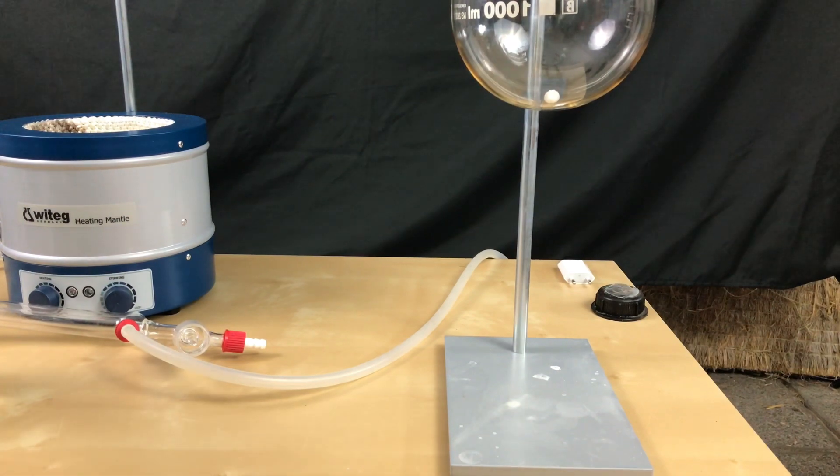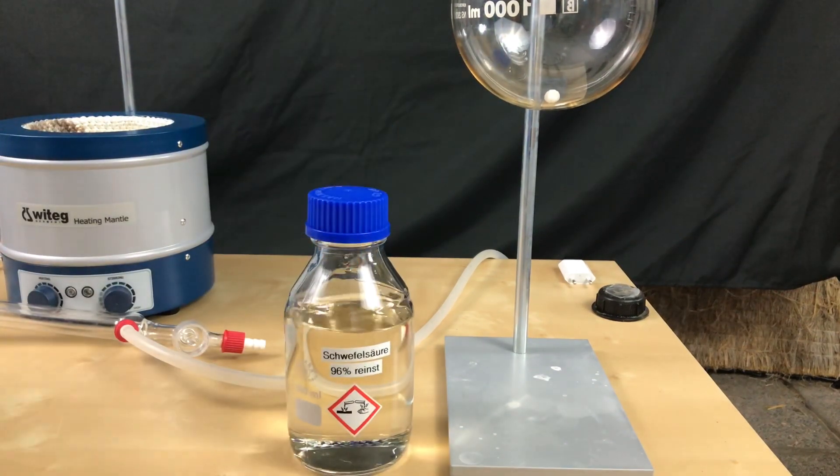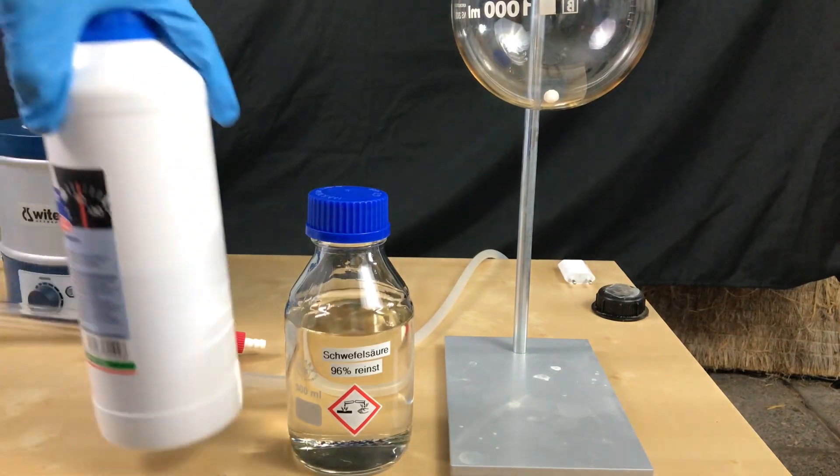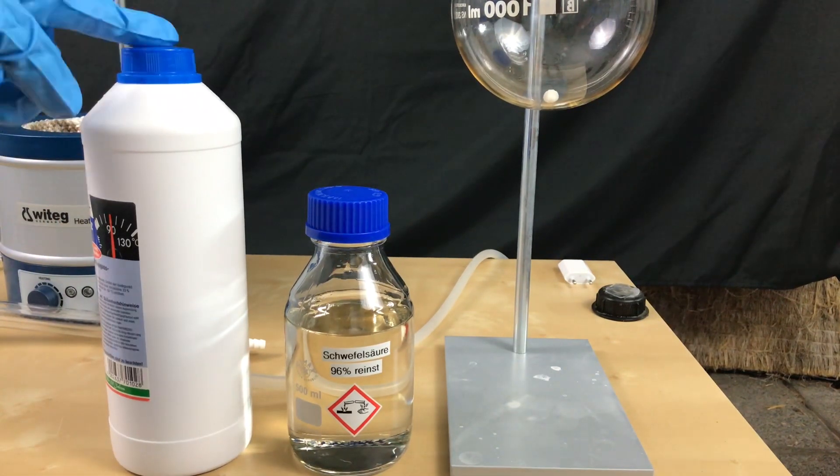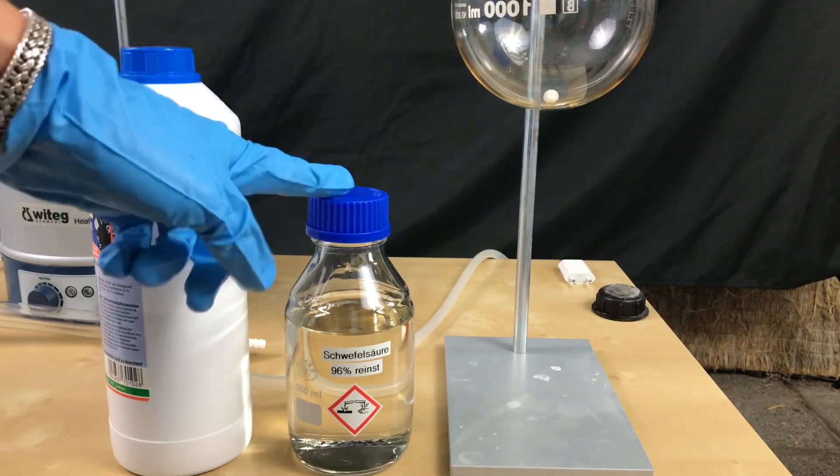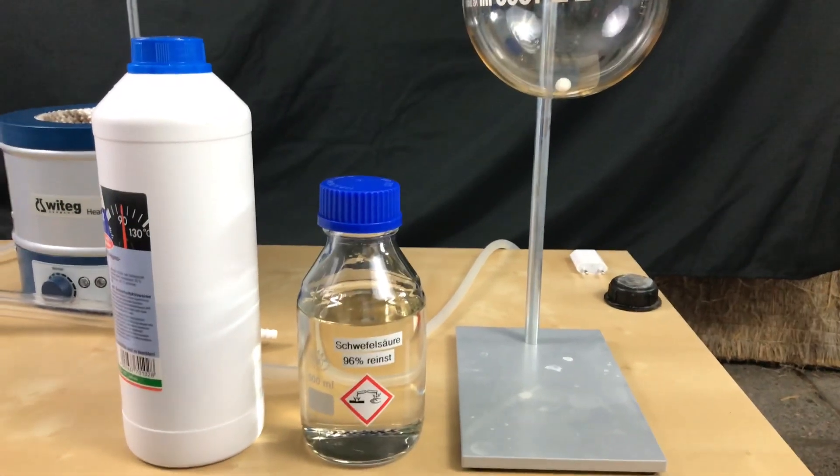Welcome back everyone. Today we are going to make some 1,4-dioxane. For this we will use 69% sulfuric acid and ethylene glycol. The purity of the ethylene glycol actually doesn't matter.